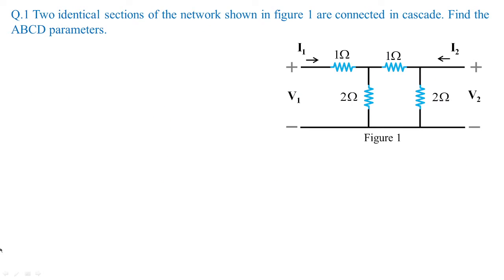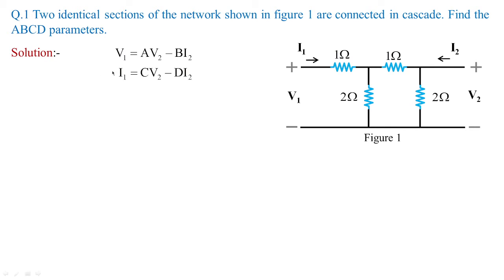Let us go with an example. In figure 1, you can see we have input and output connections given to this particular network. Two identical sections of the network shown in figure 1 are connected in cascade. We need to find the ABCD parameters for the overall network shown in figure 1. First, determine the transmission line parameters, which are given by V1 and I1 in terms of V2 and I2.